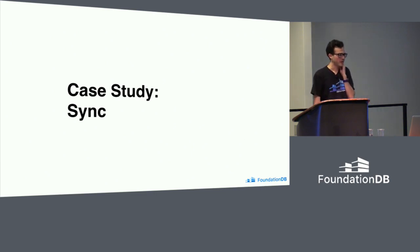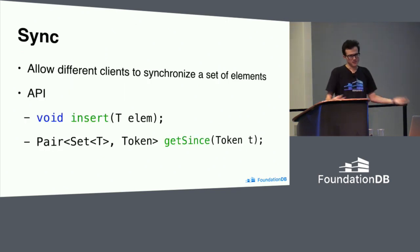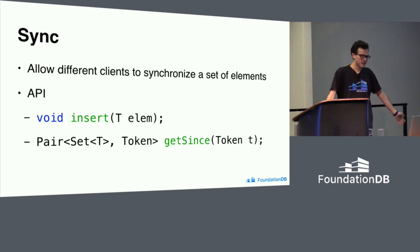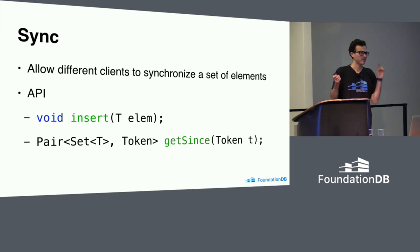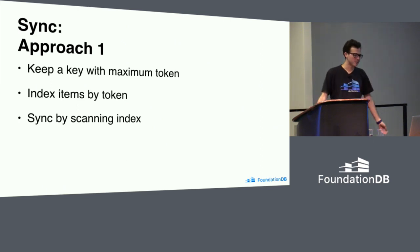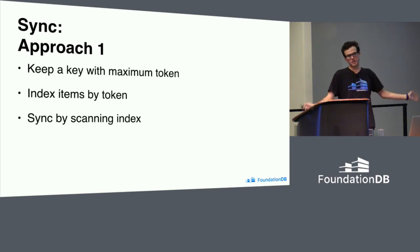To talk about these techniques, I want to go through a case study: the sync problem. Synchronization is a process where multiple clients want to synchronize on some set of values — in this case a mathematical set, though you could imagine synchronizing a map or something more complex. The API is simple: you can insert things into your sync machine, and you can get things from it, passing a token from the last time you read so you only get updates — you're tailing updates continuously. We'll start with a simple approach: keep a key holding the maximum token seen so far, keep an index of items in the sync machine indexed by this token value, and sync by doing a scan.